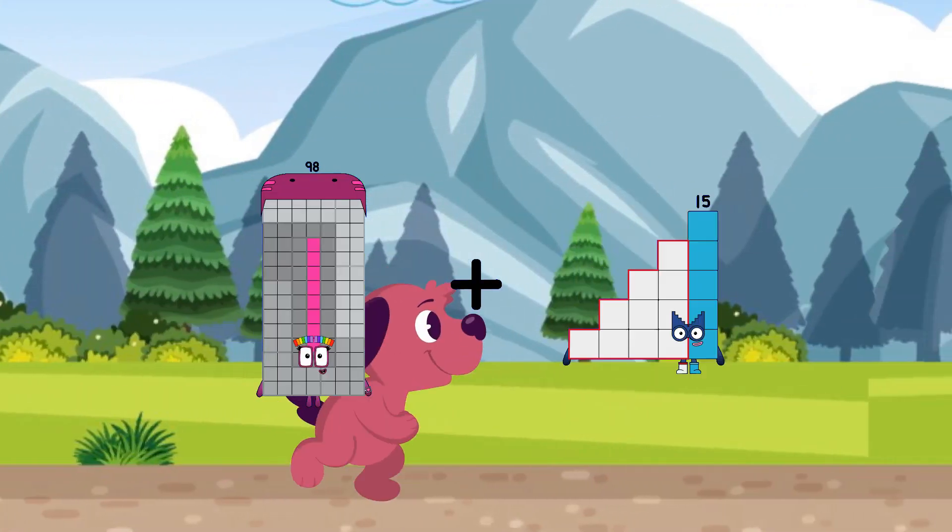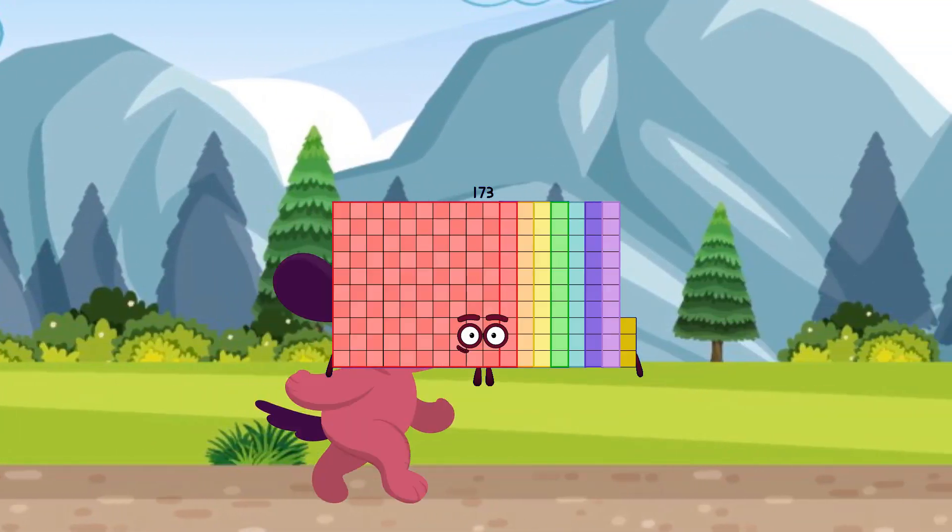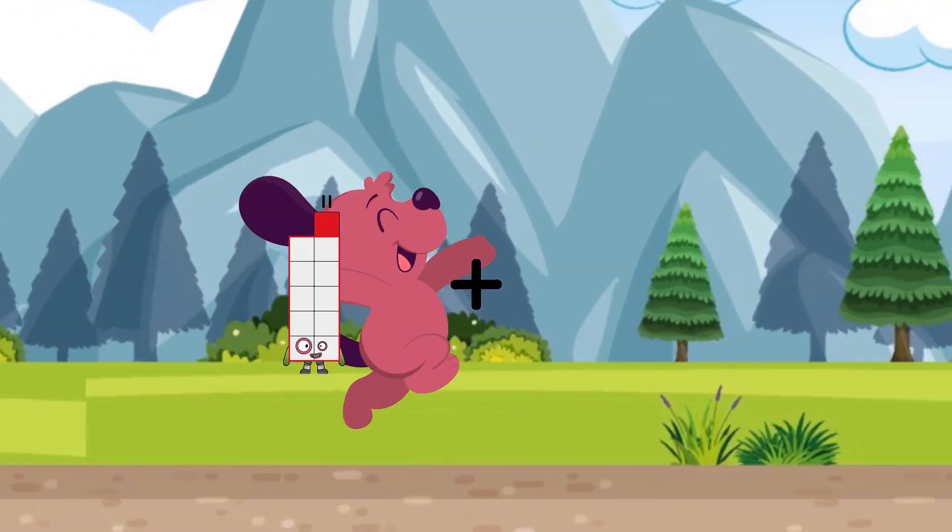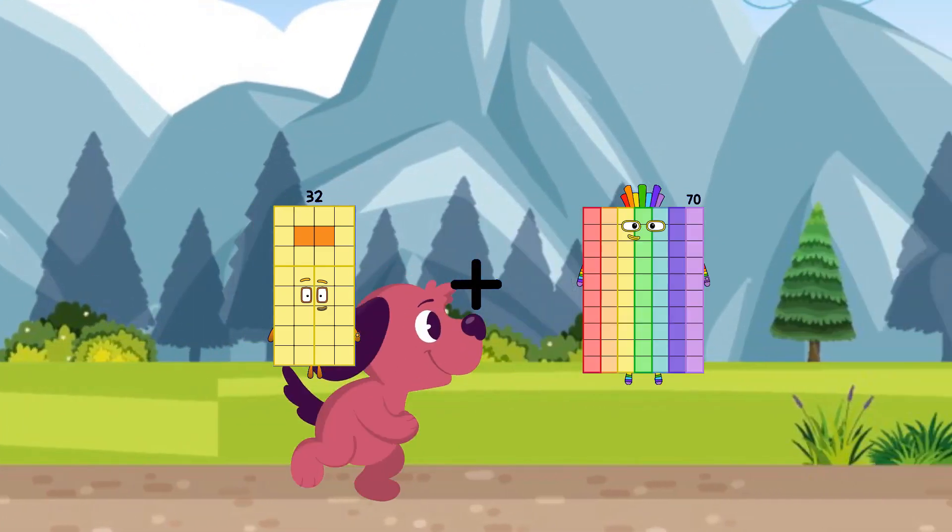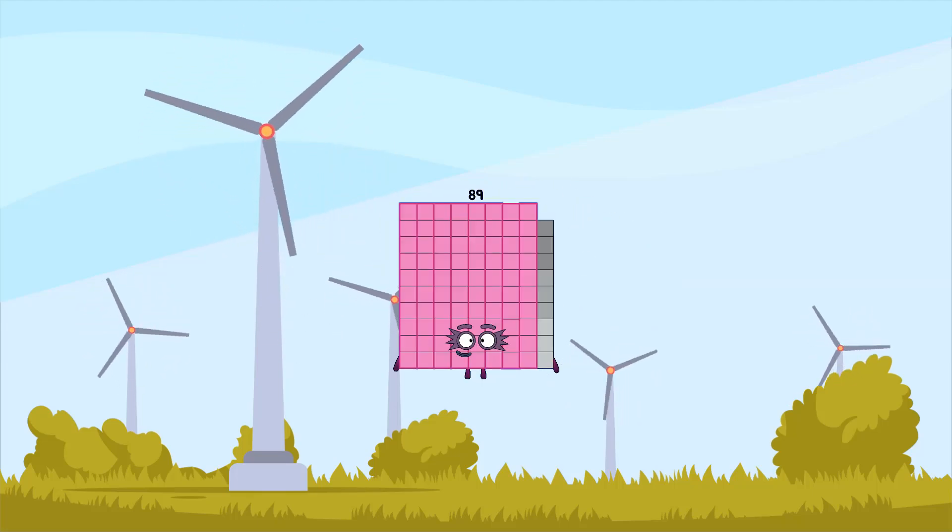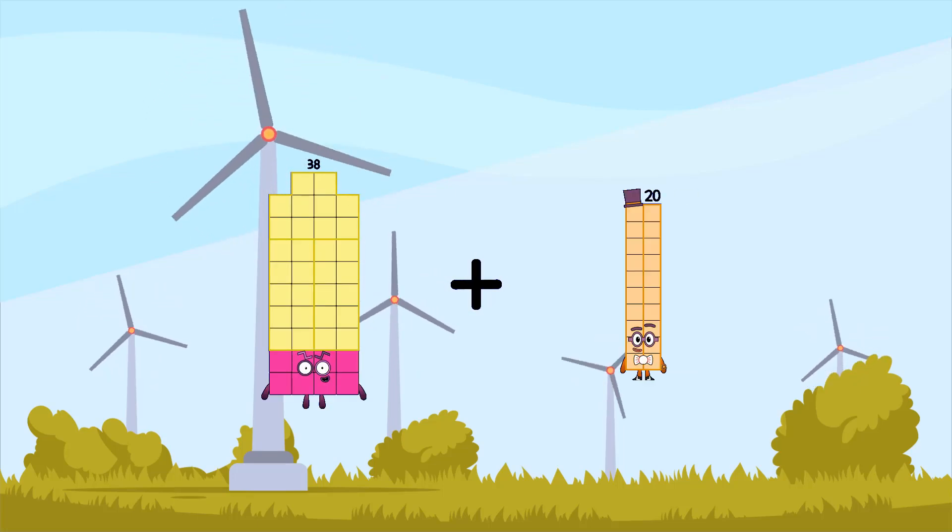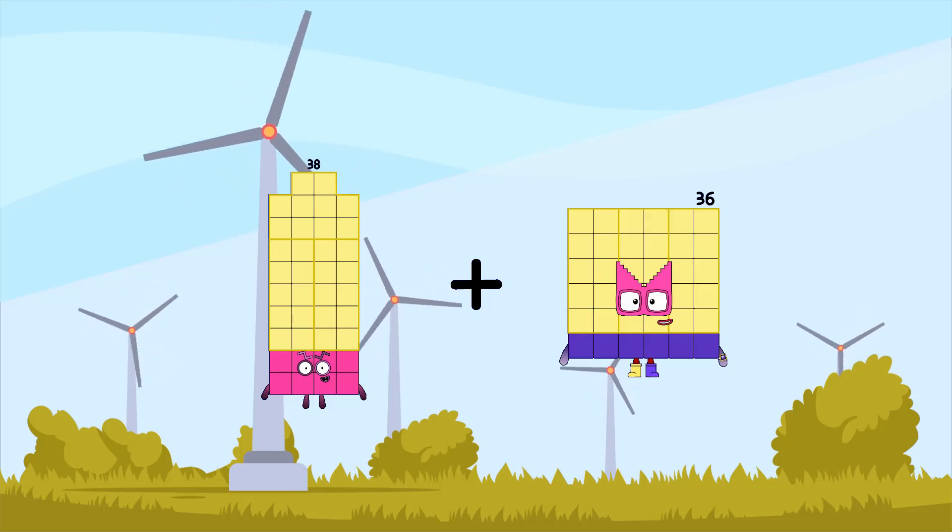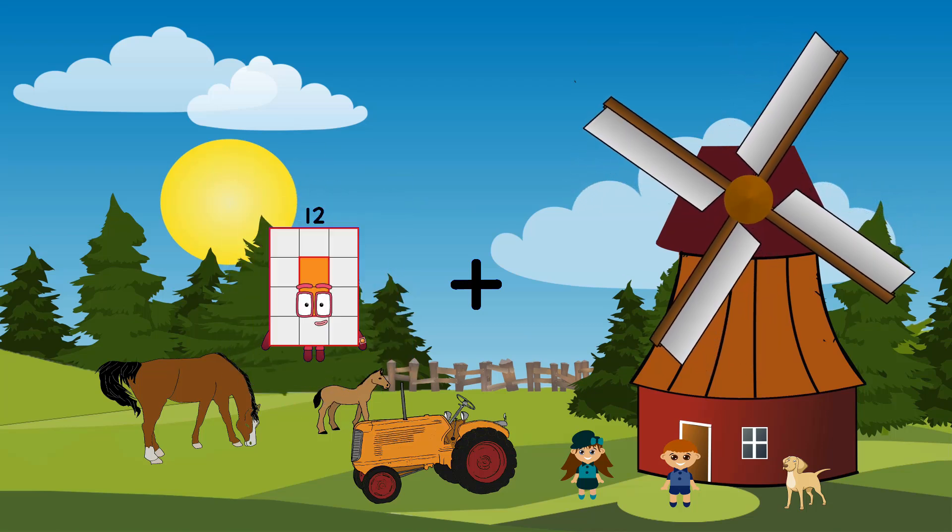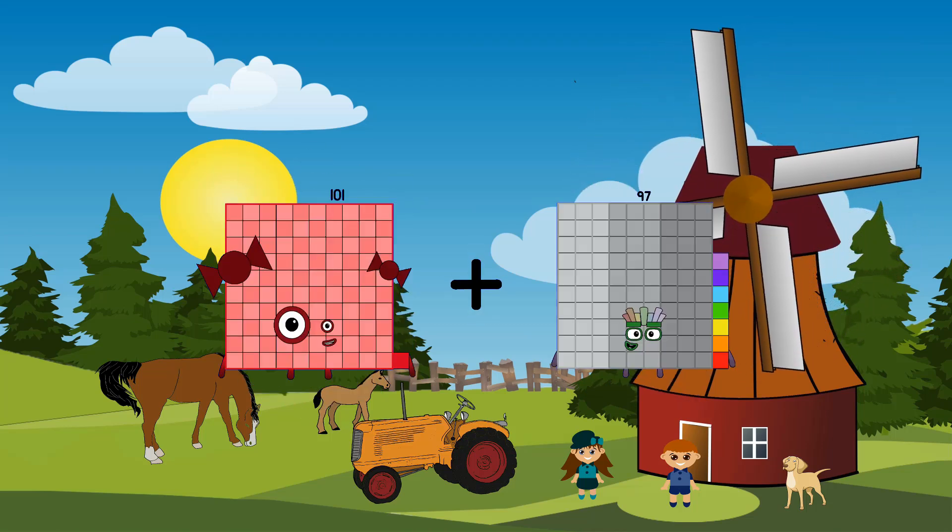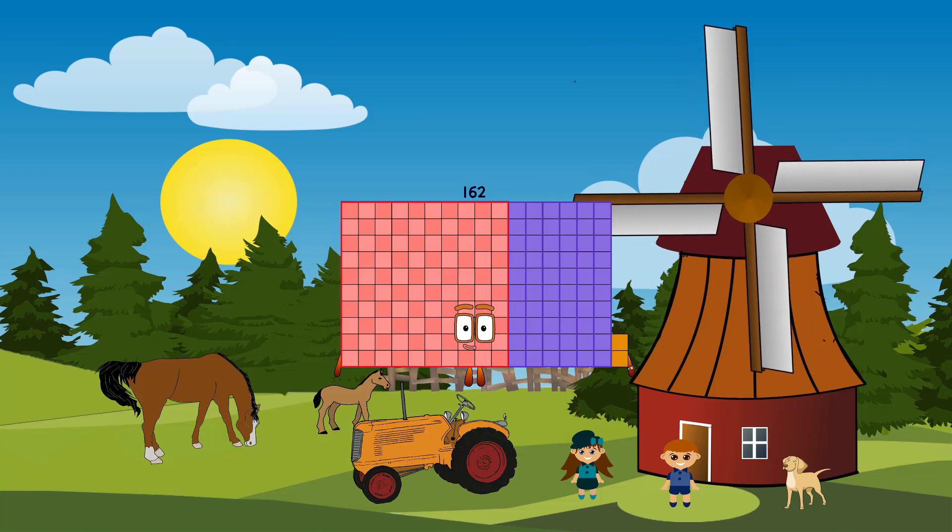98 plus 75 equals 173. 32 plus 57 equals 89. 38 plus 36 equals 74. 101 plus 61 equals 162.